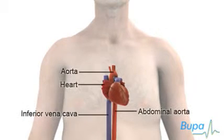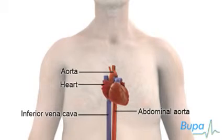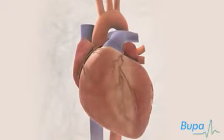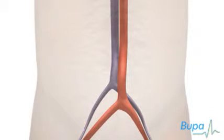The abdominal aorta is an artery in the abdomen or tummy which is connected to the heart. An aortic aneurysm is a thin, weakened section of the aorta wall that bulges outward.